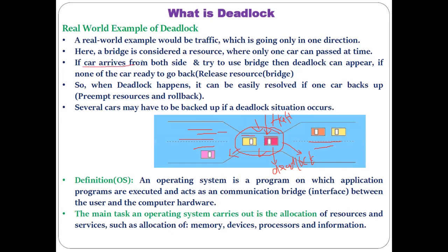If cars arrive from both sides and try to use the bridge, deadlock appears if none of the cars is ready to go back. When the red car goes back, it means the red car has released the resource — the bridge. If neither car is ready to release the bridge, that halted situation is referred to as deadlock.